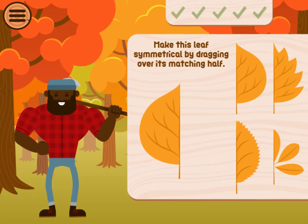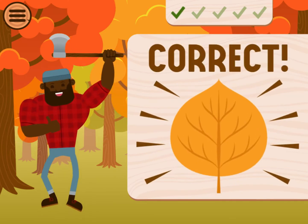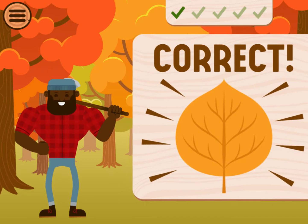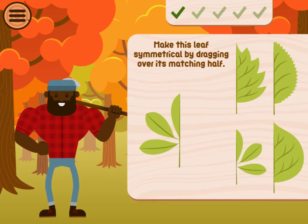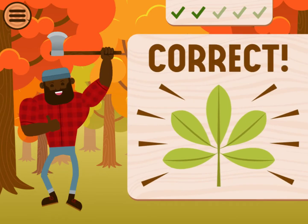Make this leaf symmetrical by dragging over its matching half. Great! Correct!